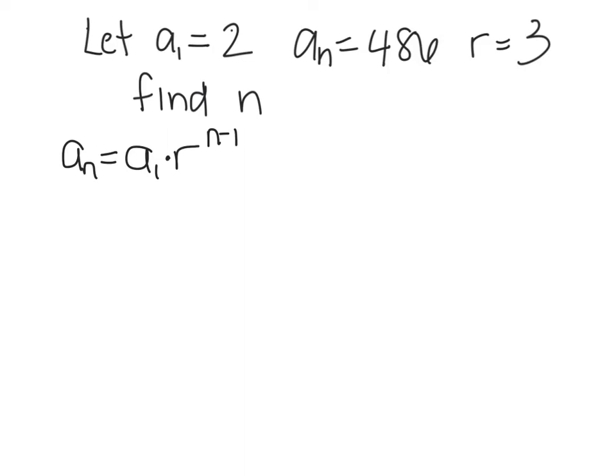This is why we save this unit for last. After we've done everything, we can bring in all of our strategies for solving equations. So, A N is 486. And that equals 2 times 3 to the N minus 1 power. Just plugging in what I know. Now, how can I solve that? Do I multiply the 2 times the 3? No, because I have this variable in the exponent, so I need to divide by the 2, because it's being multiplied. And 486 divided by 2 is 243.